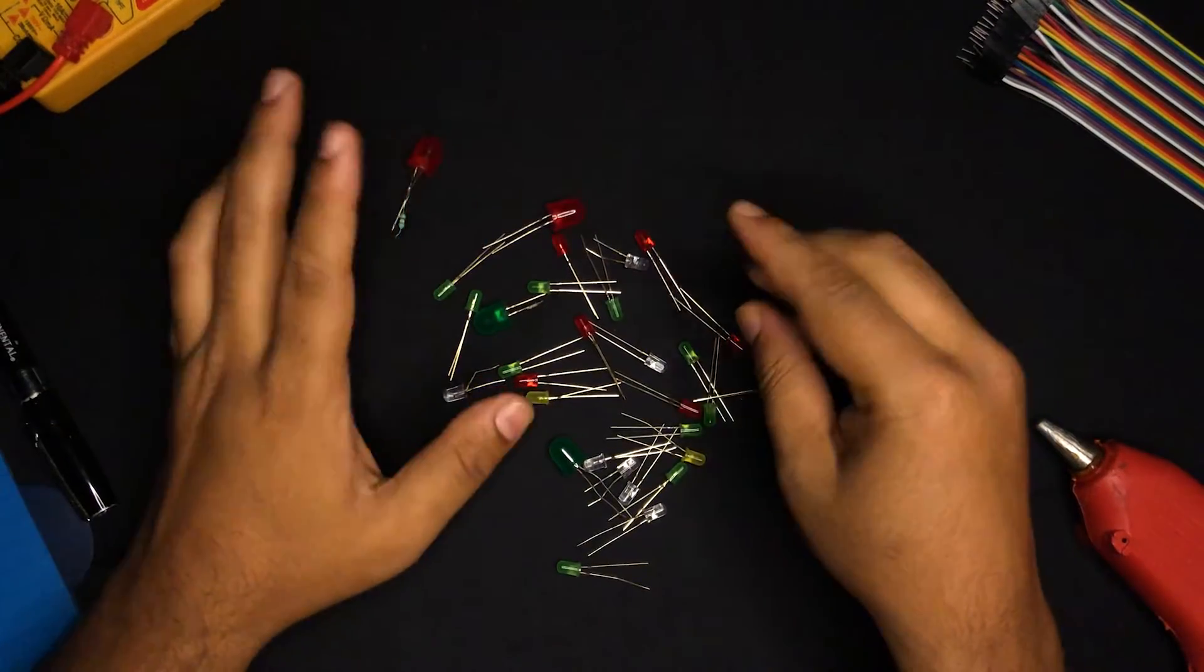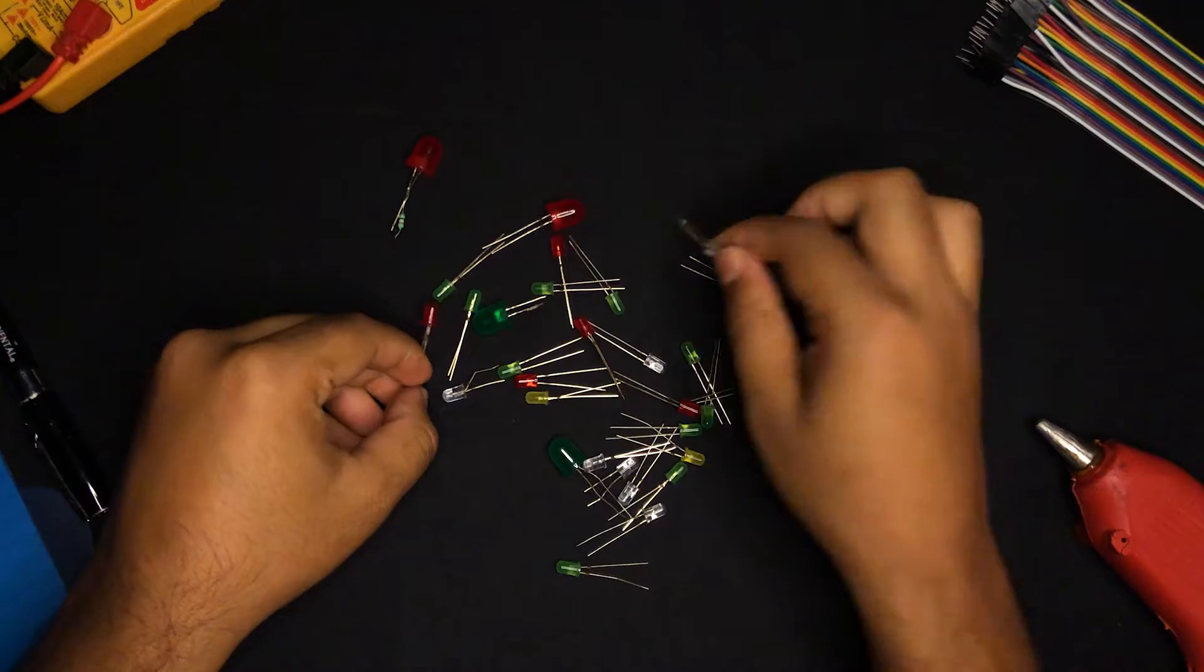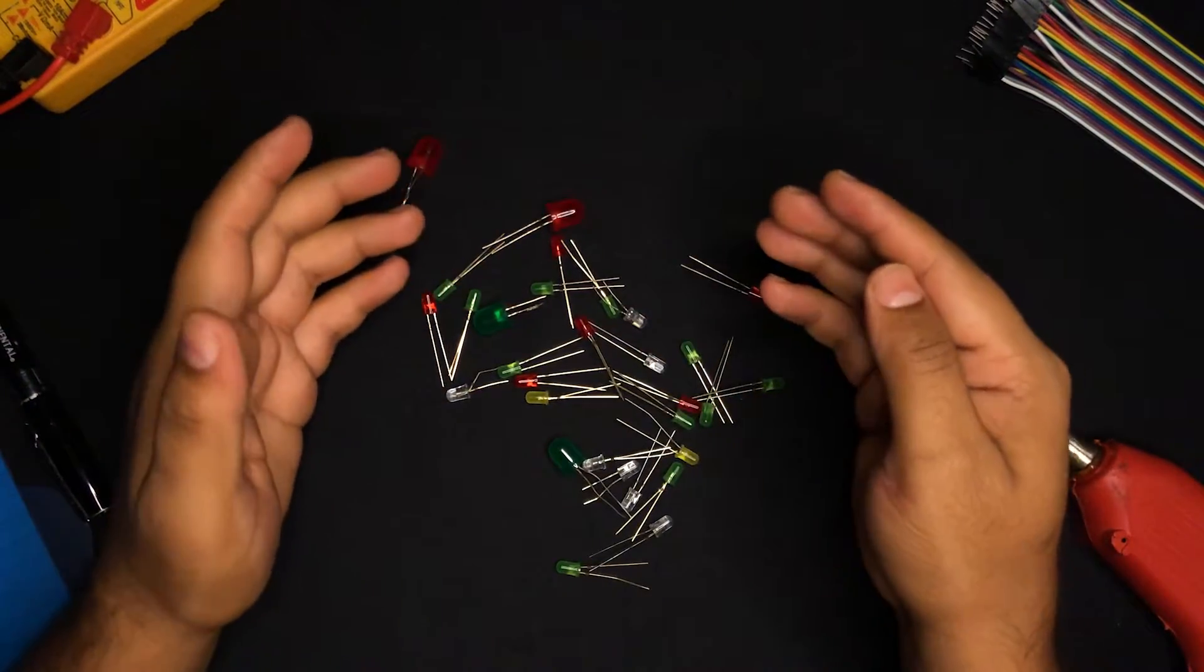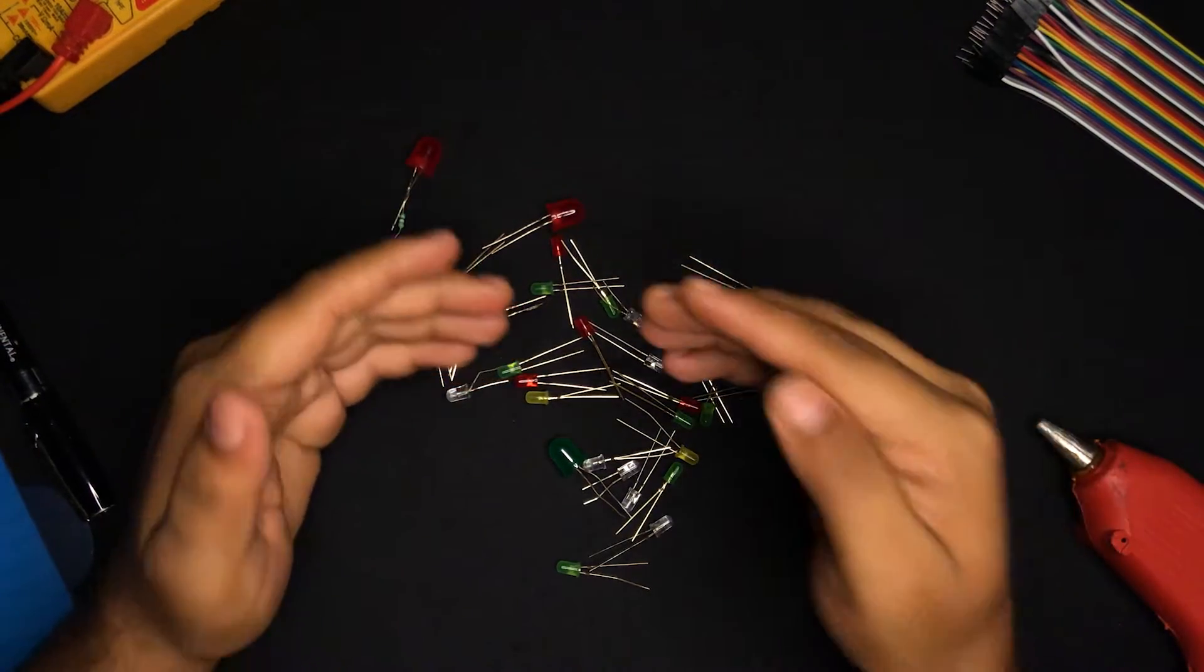As you can see here, we have different colors of LEDs: we have red, we have blue, we have green, yellow, etc. Now, how are we achieving these different colors? As we said earlier, it's by using different semiconductors.